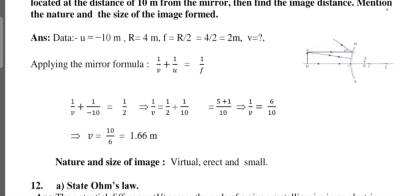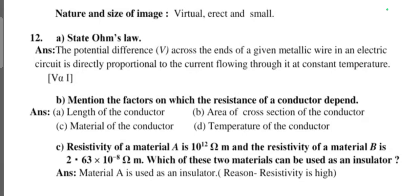Question number twelve: state Ohm's law. The potential difference across the ends of a given metallic wire in an electric circuit is directly proportional to the current flowing through it at constant temperature (V α I). Mention the factors on which resistance of the conductor depends: length of the conductor, area of cross section of the conductor, material of the conductor, temperature of the conductor. Resistivity of material A is 10 to the power 12 ohm meter and resistivity of material B is 2.63 × 10 to the power minus 8 ohm meter. Which of these two materials can be used as an insulator? Material A is used as an insulator because resistivity is very high.